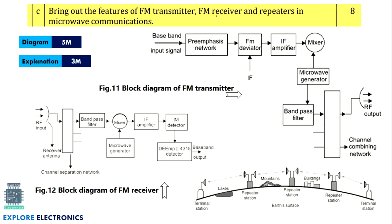Bring out the features of FM transmitter, FM receiver, and repeaters in microwave communication. Note: this refers to the microwave communication transmitter and receiver, not frequency modulation from the earlier chapter. In microwave communication, explain the transmitter diagram, the receiver diagram, and the repeater placed in between to transmit over longer distances. Diagrams are very important here — five to six marks for diagrams and three marks for explanation on how the transmitter and receiver work.